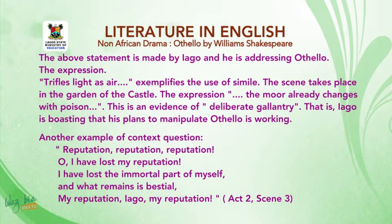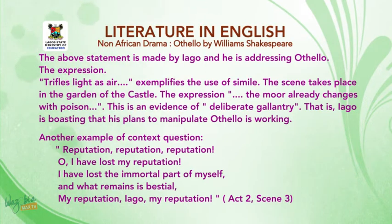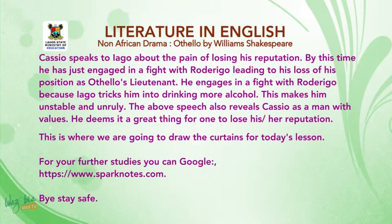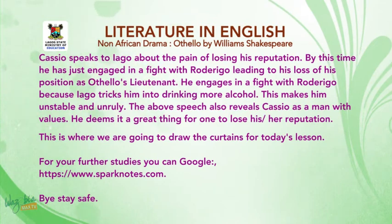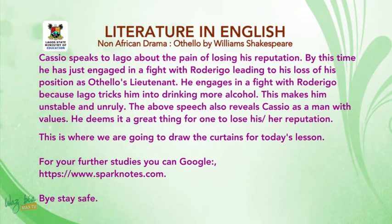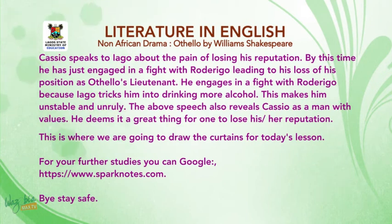Another quotation: 'Reputation, reputation, reputation. Oh, I have lost my reputation. I have lost the immortal part of myself and what remains is bestial. My reputation, Iago, my reputation.' This takes place in Act two, scene three. Cassio speaks to Iago about the pain of losing his reputation. By this time he has just engaged in a fight with Rodrigo, leading to his loss of his position as Othello's lieutenant. He fought Rodrigo because Iago tricked him into drinking more alcohol, making him unstable and unruly. This speech also reveals Cassio as a man with values — he deems it a great loss for one to lose his or her reputation.